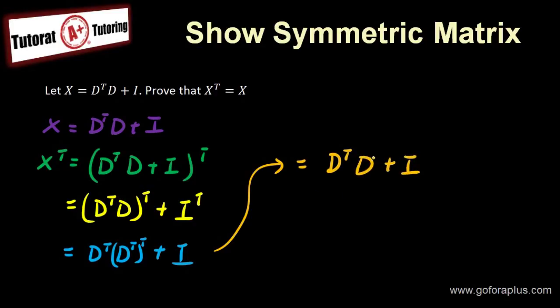And guess what? This is basically my original x. So this is equal to x. So x transpose is equal to x. And this is how I prove that this is symmetric.